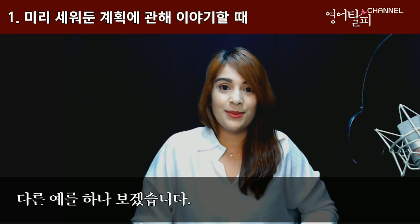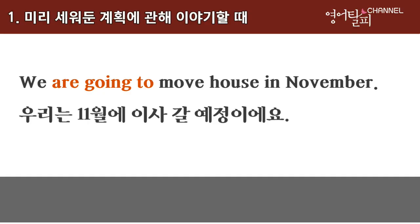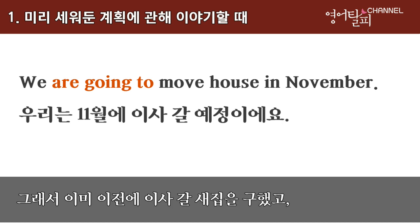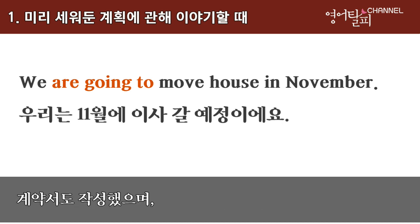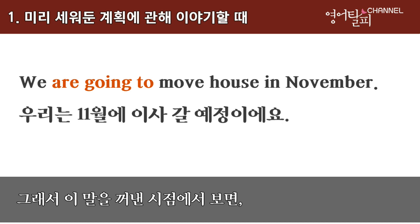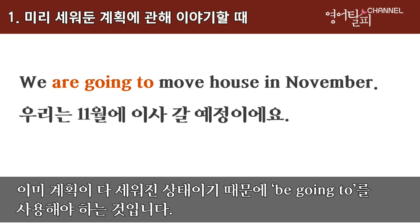Let's take a look at another example: we are going to move house in November. Here, before saying that, first we found our new house, we signed the contract, we set the moving date for November, and then we told people about it. So at the time of speaking, the plan was already made, which is why we use be going to to talk about plans already made.